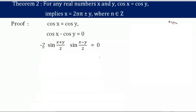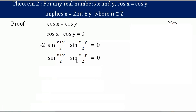The minus 2 will disappear when we divide both sides by minus 2, so what remains is sin((x+y)/2) · sin((x−y)/2) equals 0. Now we can equate each factor to zero: sin((x+y)/2) equals 0 and sin((x−y)/2) equals 0.